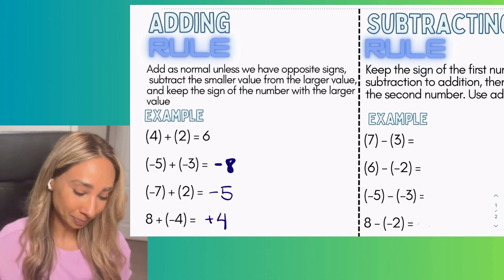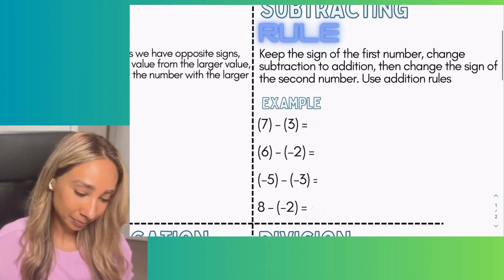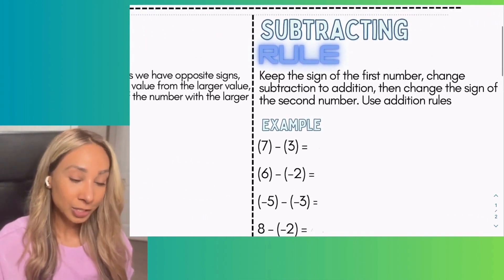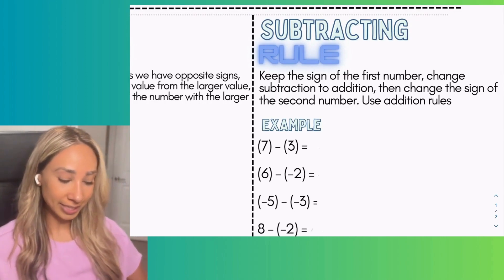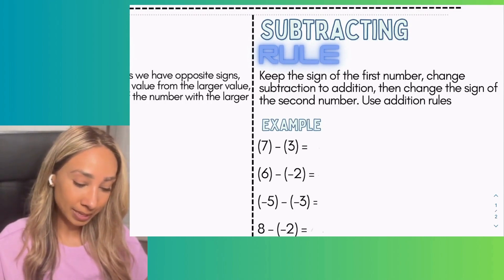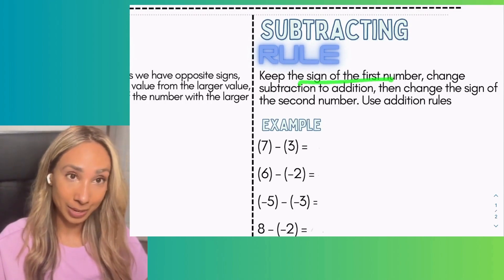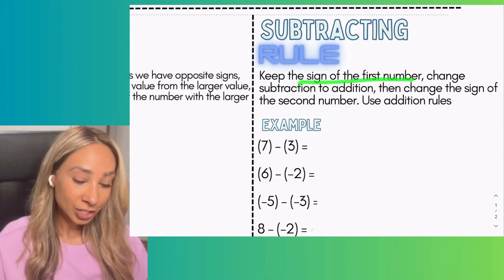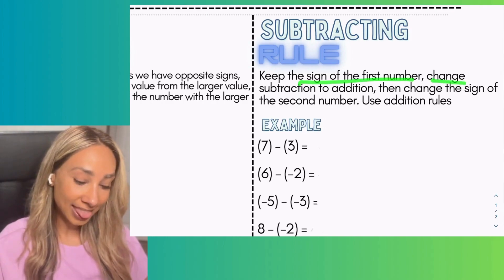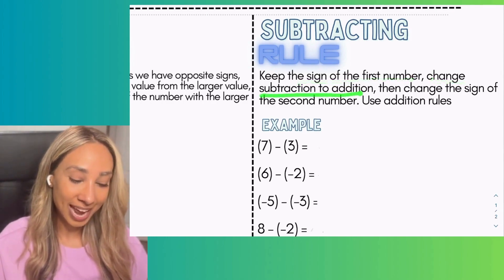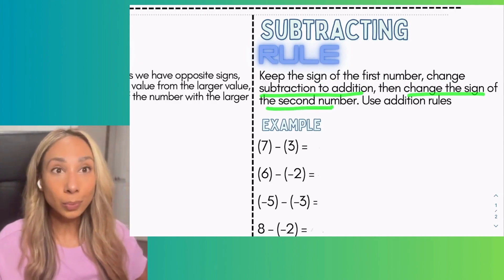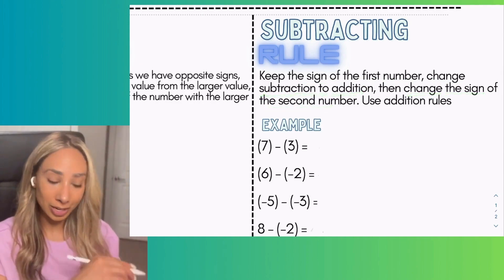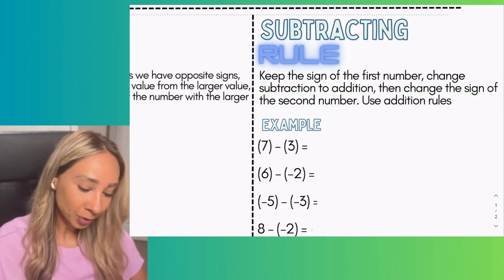Let's look at subtracting integers. The rule is: keep the sign of the first number, change the subtraction to addition, and then change the sign of the second number. Then go back and use the addition rules.